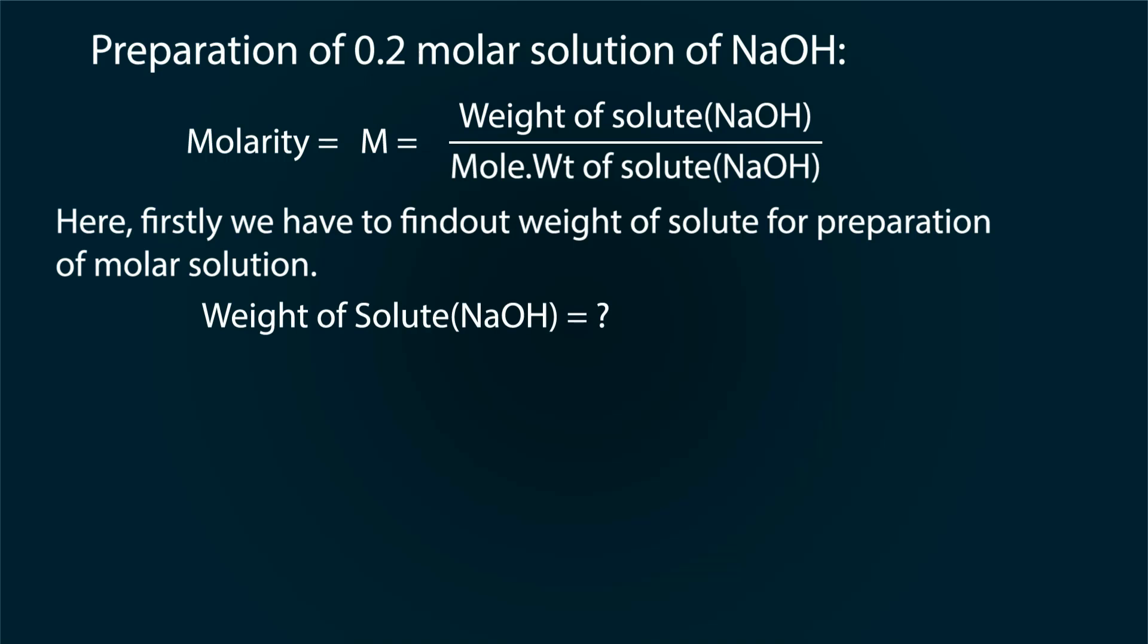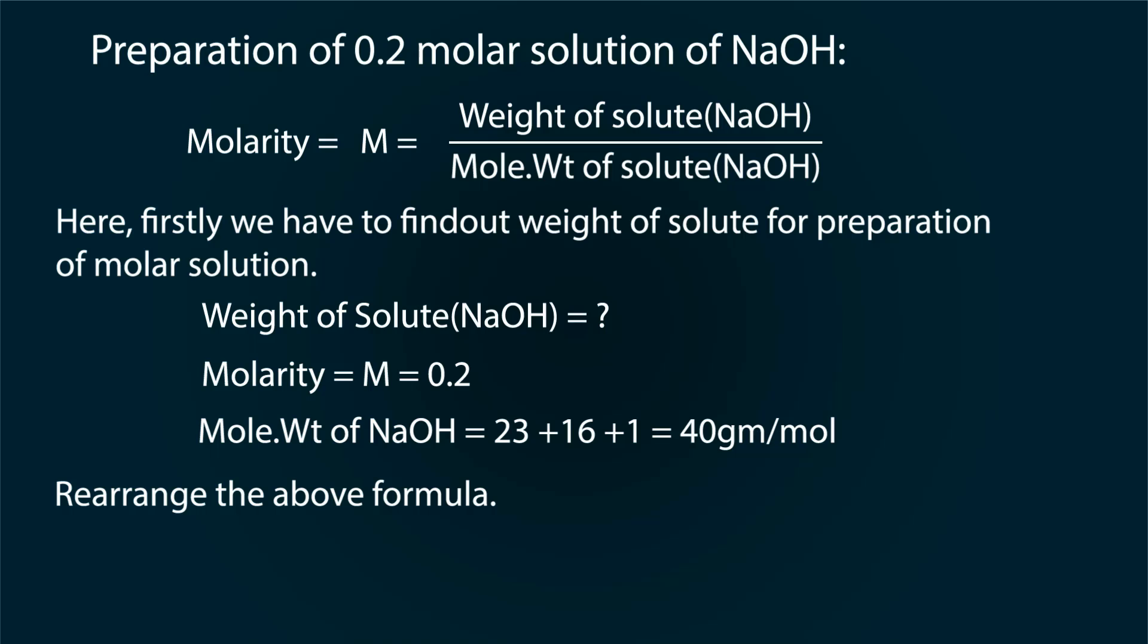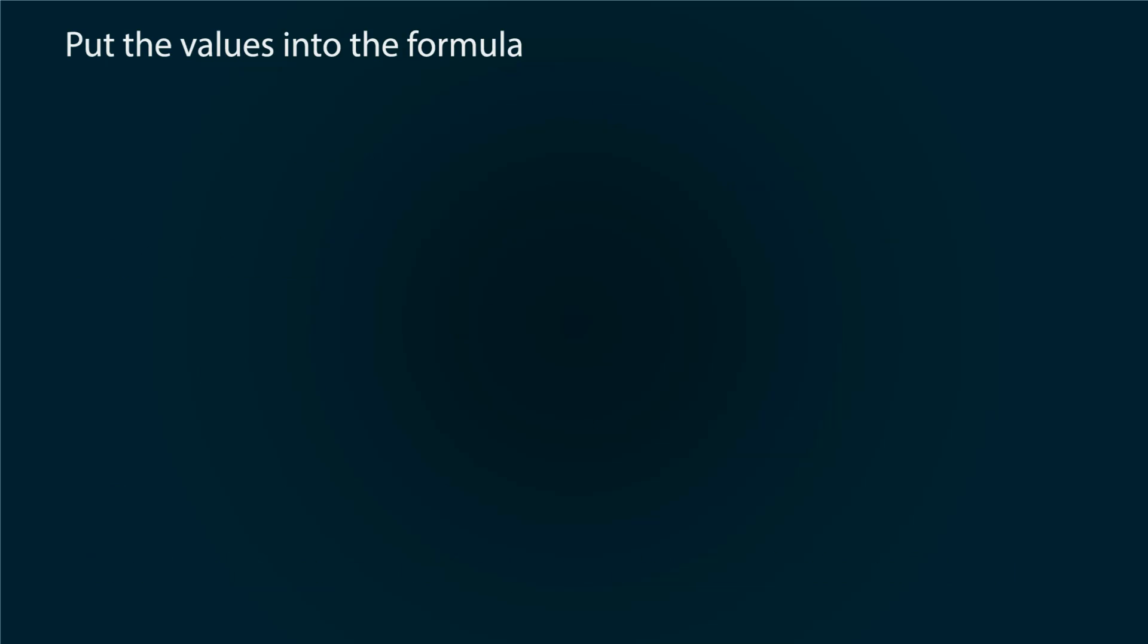So for the preparation we have to measure the weight of solute. Molarity is equal to 0.2 and molecular weight is 23 plus 16 plus 1 which is equal to 40 grams per mole. So we rearrange the formula as weight of solute is equal to molarity multiplied by its molecular weight. Put the values into the formula. We get 0.2 multiplied by 40. Mol is cut with mol. We get our value 8 grams.